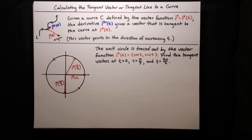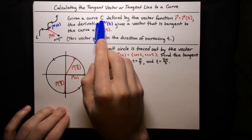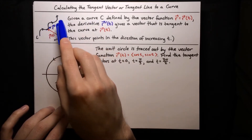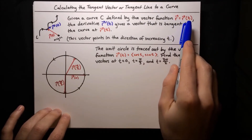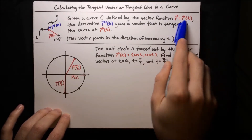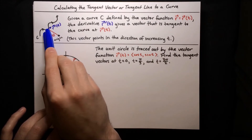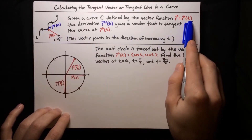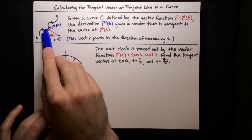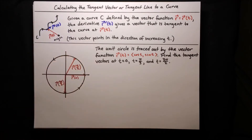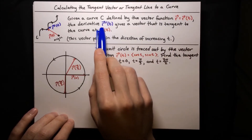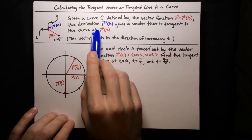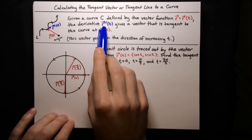To break this down: we're given a curve C, and the curve is defined by this vector function r equals r of t. That means when we plug in t into the function r of t, that gives us a point on the curve. As we increase or decrease t, that traces out more points along the curve. The big idea is that if we know the vector function for the curve, we can find the tangent vector to any point by just computing the derivative r prime of t.